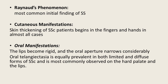In cutaneous manifestations, skin thickening begins in the fingers and hands in almost all cases. In oral manifestations, the lips become rigid and the oral aperture narrows considerably, and oral telangiectasia is equally prevalent in both limited and diffuse forms of scleroderma, most commonly observed on the hard palate and lips.